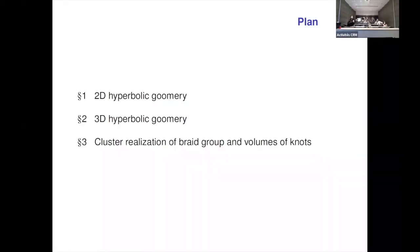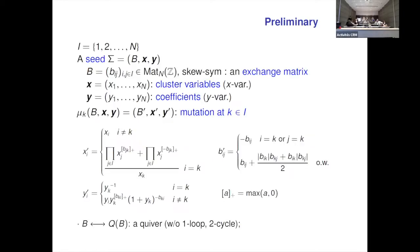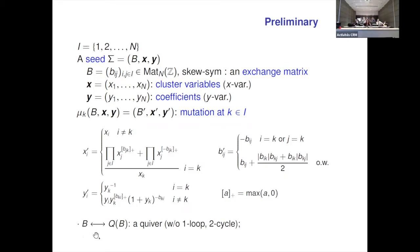I will explain the application of 3D case to compute an invariant of knots called volumes or complex volumes. This is to recall the notation in cluster algebra. We have a triple of information: first, an n×n skew-symmetric integral matrix called the exchange matrix, and we have X and Y variables. We have mutations like this, and a skew-symmetric matrix is identified with a quiver without loops and two-cycles.